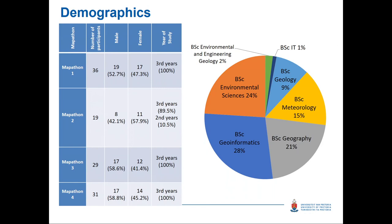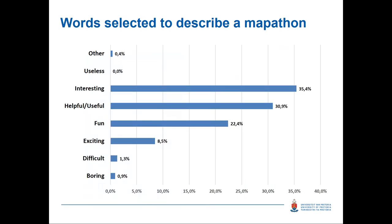A quick overview of the demographics: mapathon one had 36 people, then 19, 29, and 31. The gender distribution was relatively spread — roughly 53/47 and 42/58 — so there was a relatively even distribution among our students. They were all third-years except for mapathon two where two second-year students came along. The three biggest undergraduate programs represented were environmental science, geoinformatics, and geography, with some extras like BSc IT, geology, and meteorology.